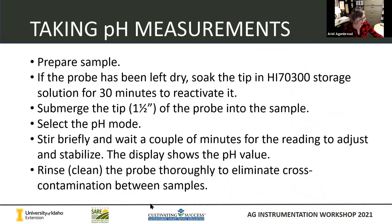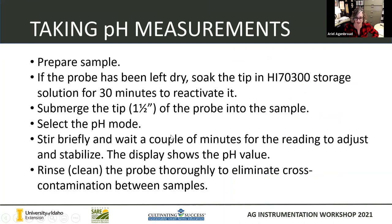So how do we take our pH samples? If your probe has been dry, refresh it in the storage solution. Put the tip about one and a half inches into the sample, select pH, stir it around a little bit, wait a couple of minutes for the reading to adjust and stabilize, and it's going to show you the pH value. Then if you're going from sample to sample, you'll want to rinse and clean that probe thoroughly with water to eliminate cross-contamination.